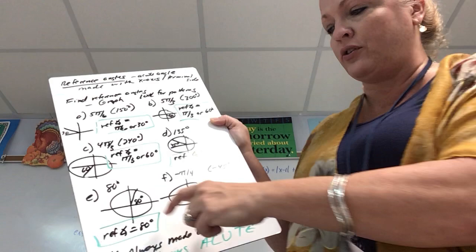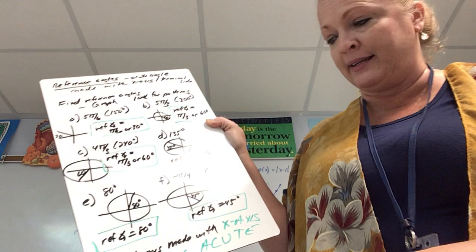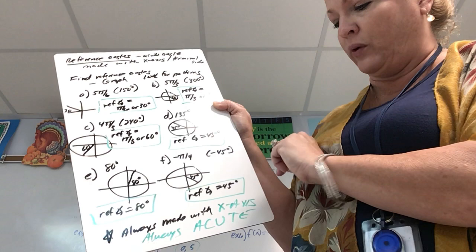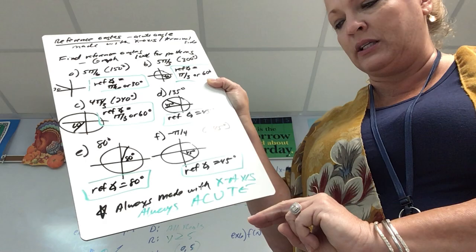Not everything comes from a special right triangle. For 80°, some people want to say the reference angle is 10° — but 80° is its own reference angle, since it is already the acute angle made with the x-axis. For -π/4, that's -45°, which makes a 45° angle with the x-axis, so the reference angle is 45°. Reference angles are always made with the x-axis, always acute, and always positive.